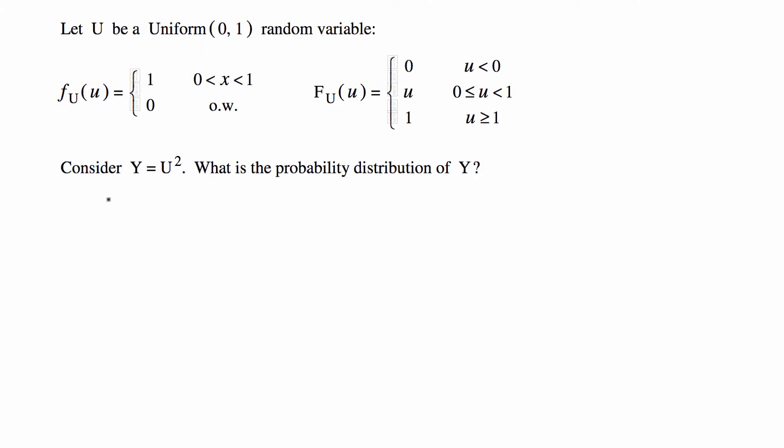To get the CDF of Y we're going to use what the transform is which is what we're given. There's a formula basically that says that the CDF of Y written like this is equal to the probability that Y is less than or equal to y and we know that Y is equal to U squared.